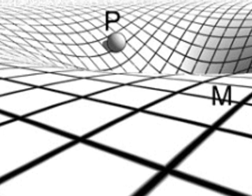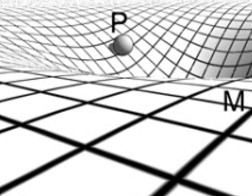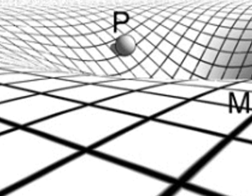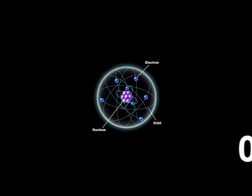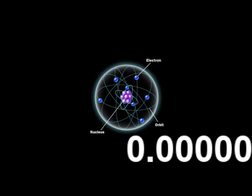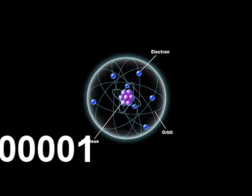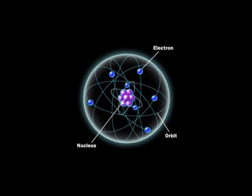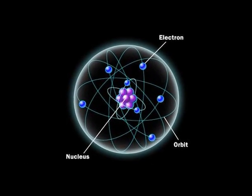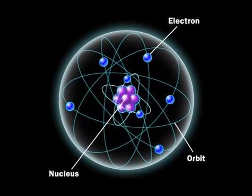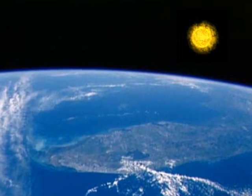A gravitational wave arriving on Earth will alternately stretch and shrink distances, but on an incredibly small scale — by a factor of ten to the negative twenty-first, or one sextillionth, for very strong sources. That's roughly equivalent to measuring a change the size of an atom in the distance from the Sun to the Earth.